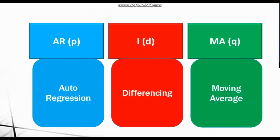In summary: in ARIMA, AR (auto-regression) is denoted by p, I (integrated/differencing) is denoted by d, and MA (moving average) is denoted by q.